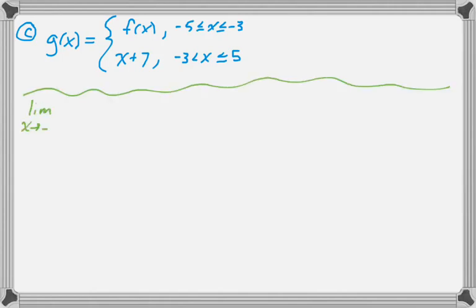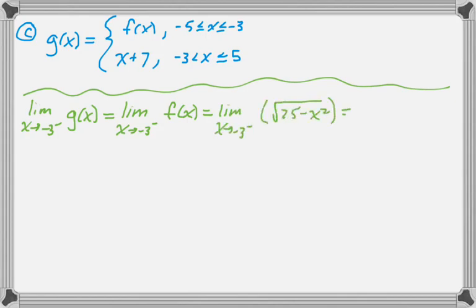So to start with, the limit as x approaches negative 3 from the left of g(x) is, so the branch of g(x) to the left of negative 3 is f(x). So that's the limit as x approaches negative 3 from the left of f(x), which I already know, but I'm going to keep showing some work because I'm not sure what I'm allowed to not show. So that's the limit as x approaches negative 3 from the left of radical 25 minus x squared, which I know is 4.